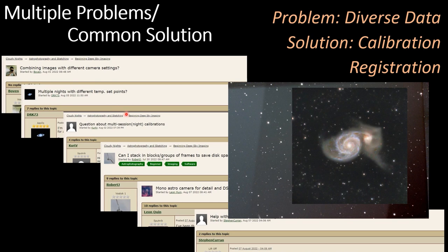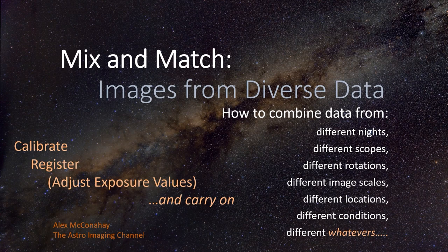We have a number of different ways to ask the same question — it's a question about how to handle diverse data. The solution is pretty much the same: calibration and registration. If you understand these two concepts and how they work, along with a little bit of cropping and normalization, you've got the idea of what you need to do. If you find yourself with subs taken on different nights with different rotations, you know what to do: calibrate it, register it, adjust for normalization if needed, and just carry on as normal.